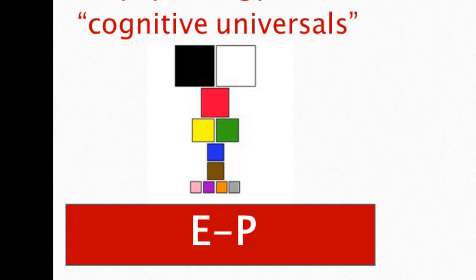Two anthropologists showed there are patterns in how languages have color terms. Some languages have only two terms — light and dark — and speakers identify black and white as best examples. With three terms, red is added. A fourth term is either green or yellow. A sixth term is always blue, a seventh always brown, and an eighth might be orange, purple, gray, or pink. People tend to pick the same most salient examples, and color terms are structured by universal human cognition.